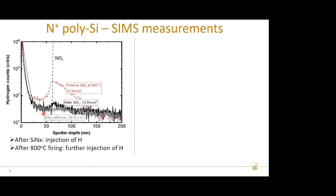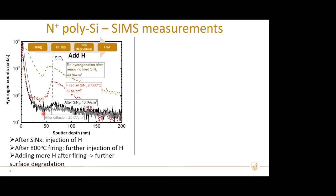After firing at 800°C, we found a significant increase in hydrogen content around the oxide, and the J0 also increased. This is quite surprising, as we expect that injection of hydrogen normally leads to improved surface passivation. After firing, we performed subsequent treatments to add more hydrogen — achieved by HF dip to remove the fired nitride films, followed by nitride deposition and forming gas anneal. Interestingly, adding more hydrogen caused a further degradation in passivation quality.